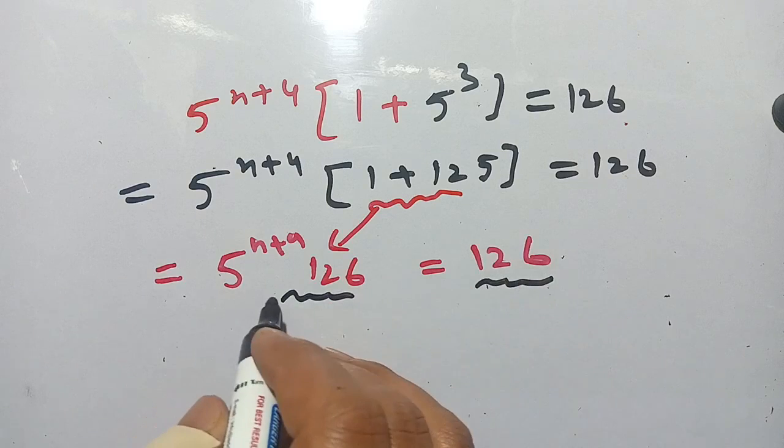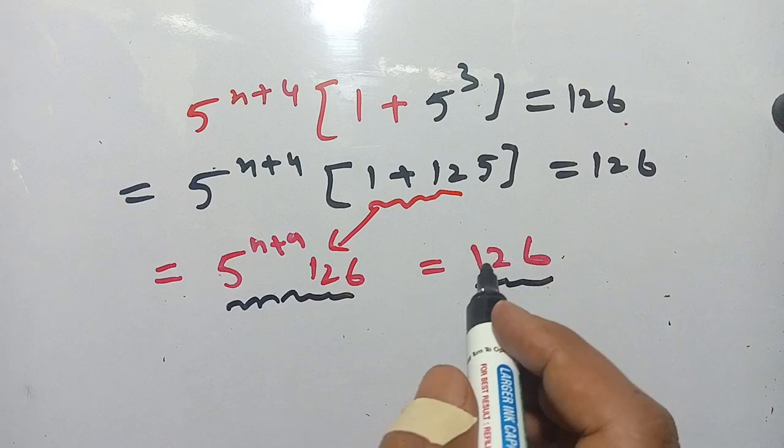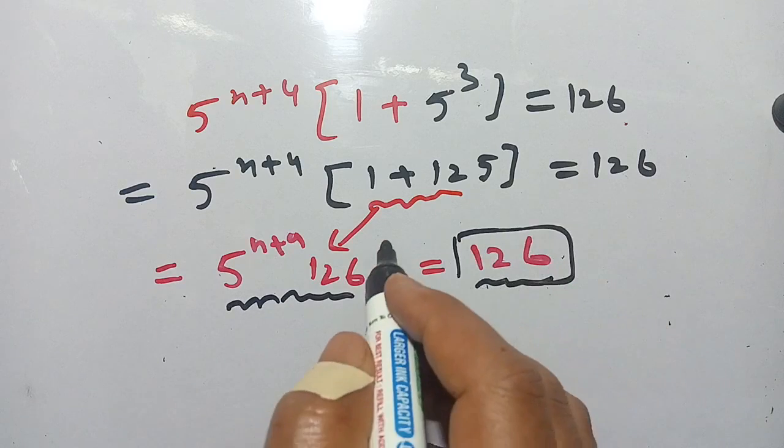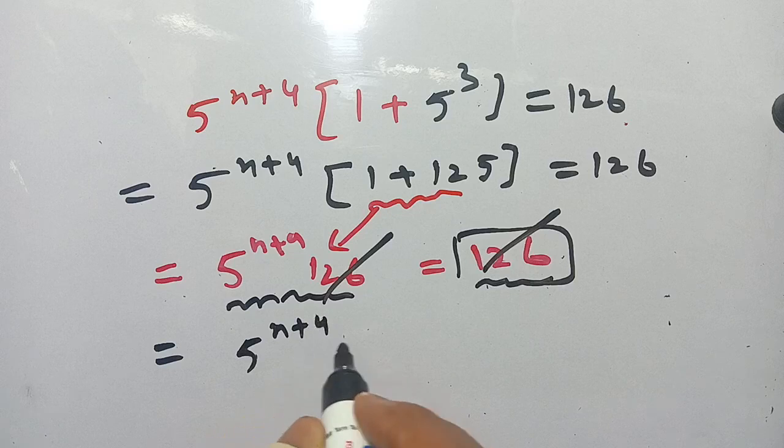And you see that this 126 and 126 can go out, because it's on the left-hand side in the multiplication and on right-hand side as it is, a single term. Now we can cancel out this 126 by 126 and remaining is 5 power n+4 is equal to 1.